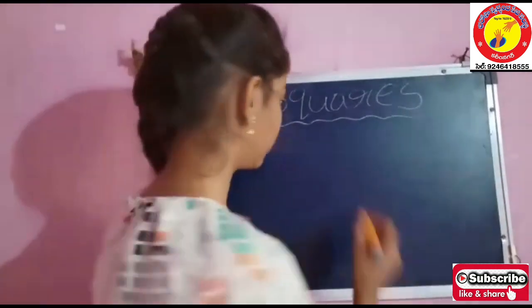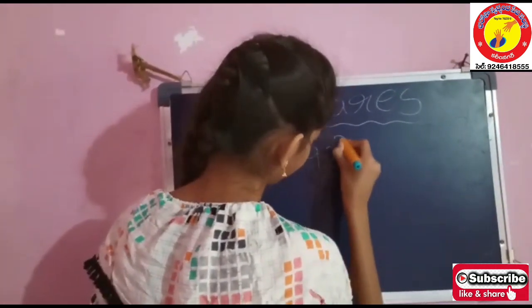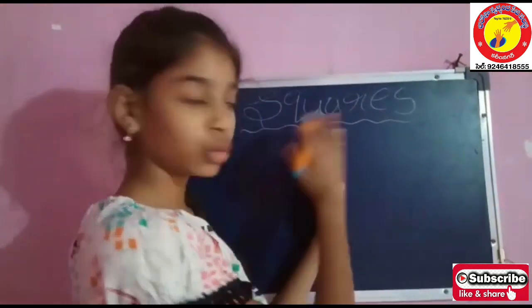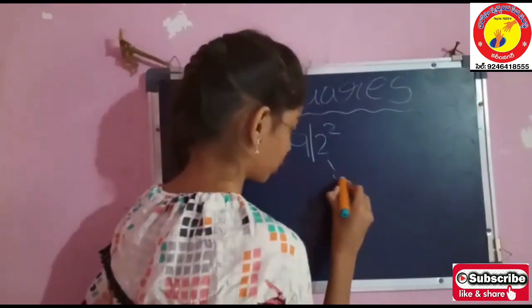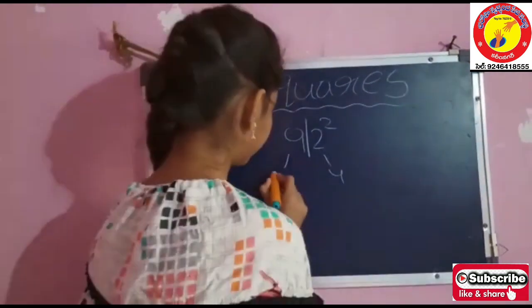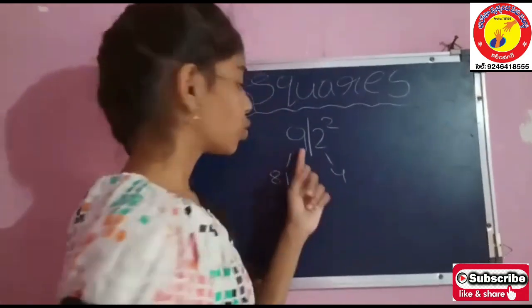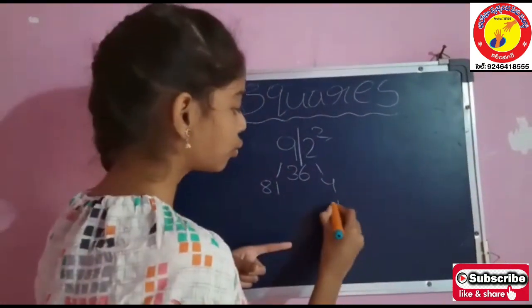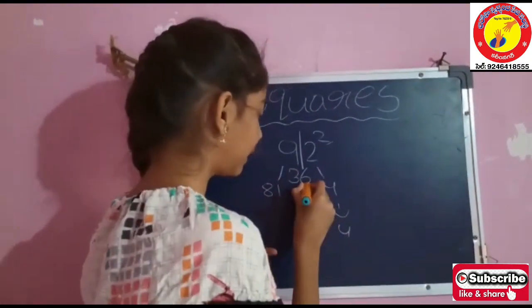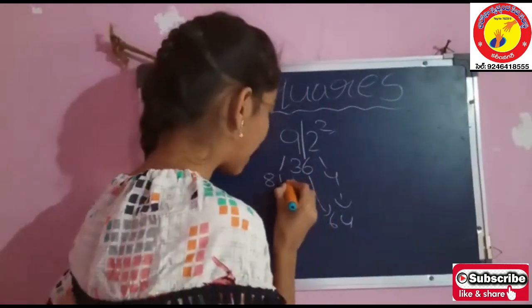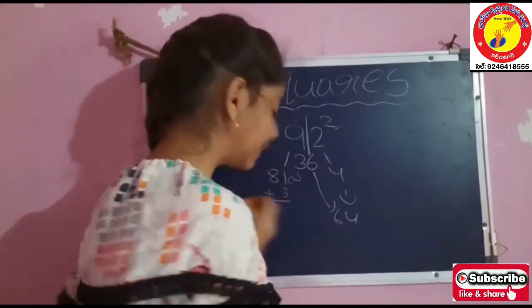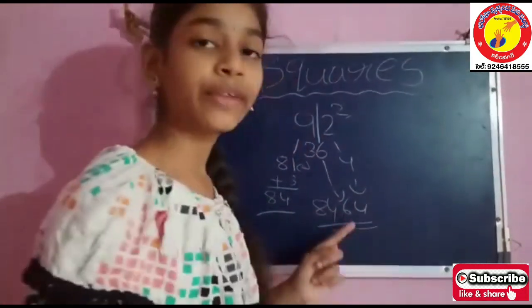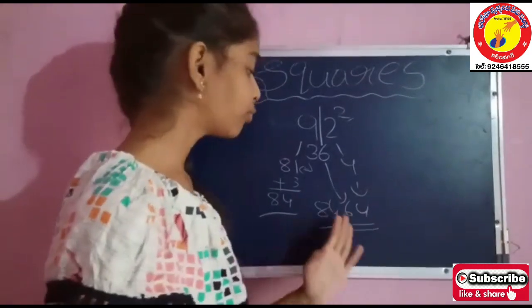Let us try one example. So we should separate the two numbers. 2 x 2 is 4, and 9 x 9 is 81. So 9 x 2 is 18, and 18 x 2 is 36. We should drop 4 here and also 6. We add 3 here, and 81 plus 3 is 84. So our answer is 84.